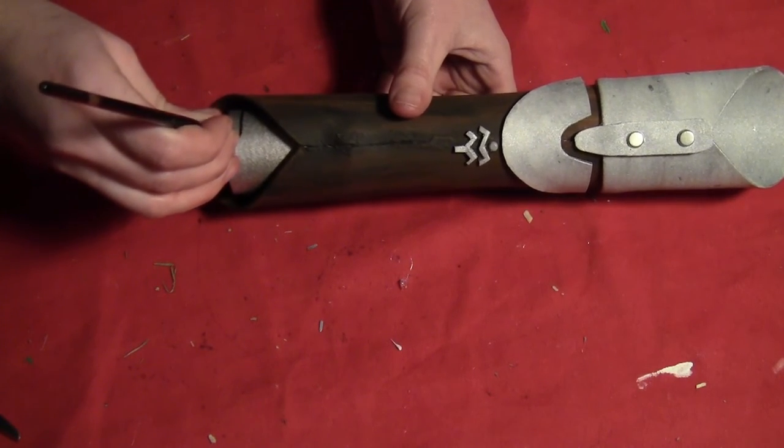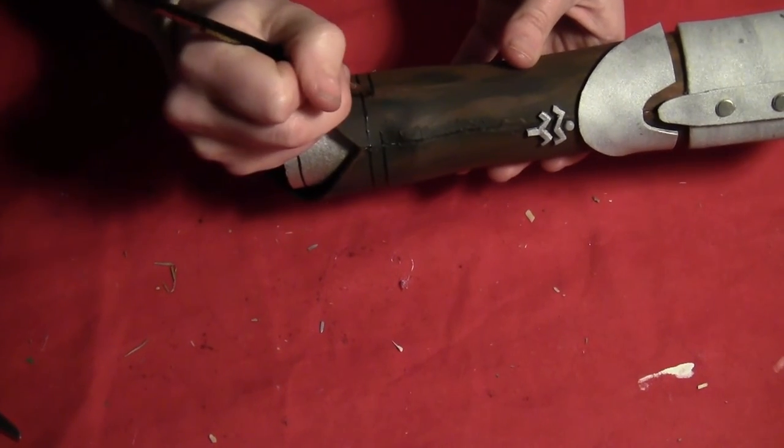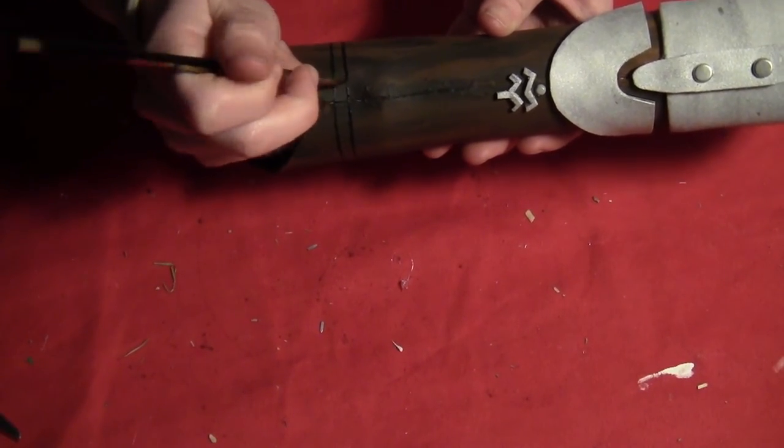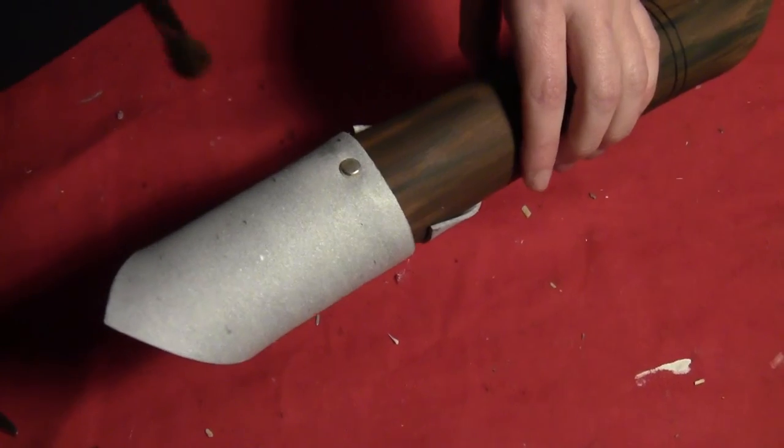So then take some black paint and a very thin brush and paint a nice thin line across the bottom of the silver. And then you'll paint two very nice thin lines towards the bottom edge of the wood grain part of the lightsaber.